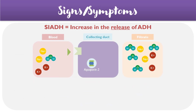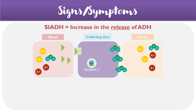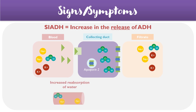With an increased amount of ADH circulating through the blood, more ADH is free to bind to the receptors of the collecting ducts, and therefore more aquaporin-2 channels fuse with the cell surface membrane. As a consequence, an increased amount of water is reabsorbed back into the collecting ducts and therefore back into the blood via channels on the basolateral side. The overall effect is that other ions, such as sodium, become diluted by the excess water present, resulting in a hypervolemic or euvolemic hyponatremia.